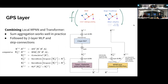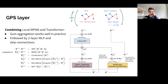We stack several of these GPS layers and put any task-specific head on top. In our GitHub implementation, we support many datasets relevant for benchmarking, including link prediction, node prediction, and graph prediction tasks.